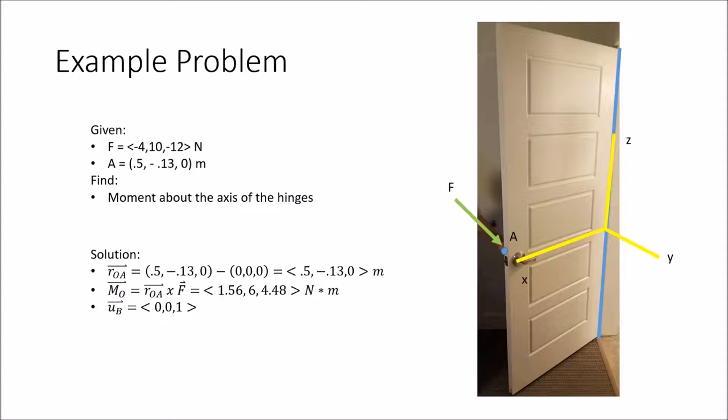None of this moment will go about any other axis which makes sense since the door cannot rotate any other way than about its hinges. Then finally we take the dot product of our moment and that unit vector and we have our final answer of 4.48 newton meters.